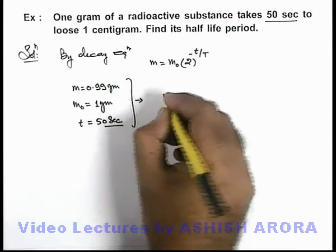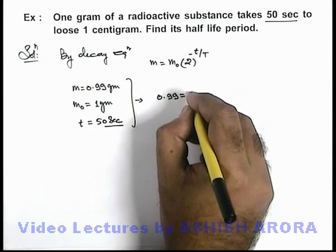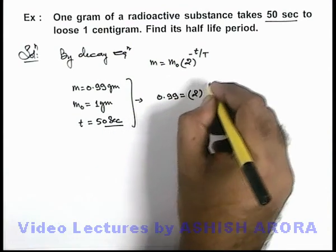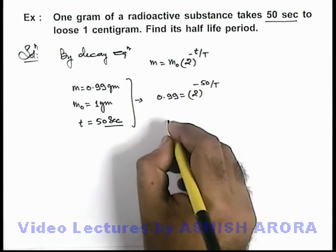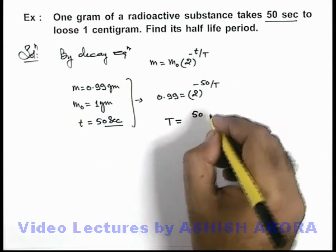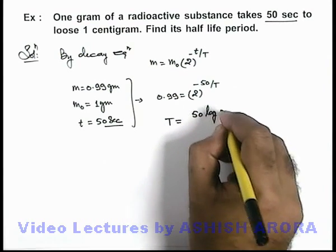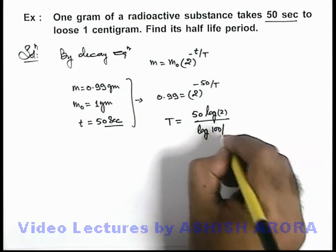So on substituting the values, we can see we are getting 0.99 = 1 × (2)^(-50/T). Just simplifying this, the value of half-life time we are getting is T = 50log(2) / log(100/99).